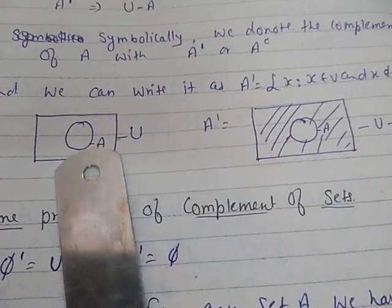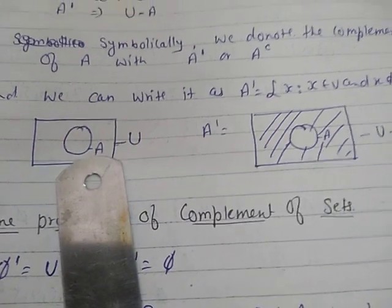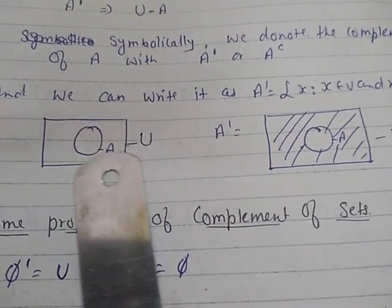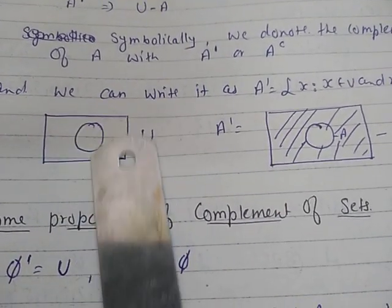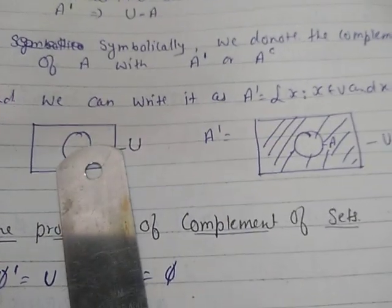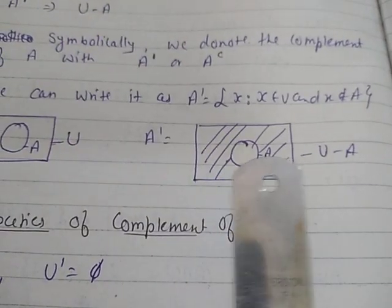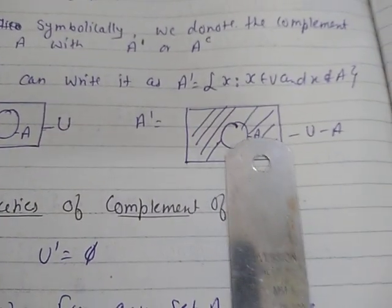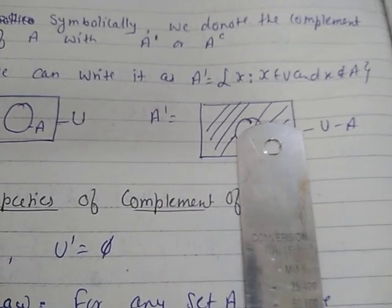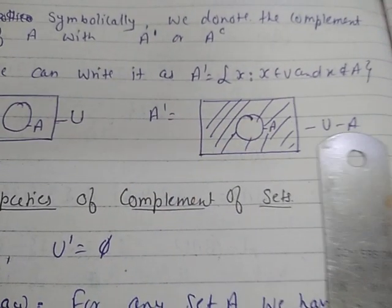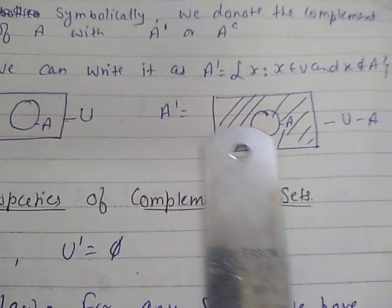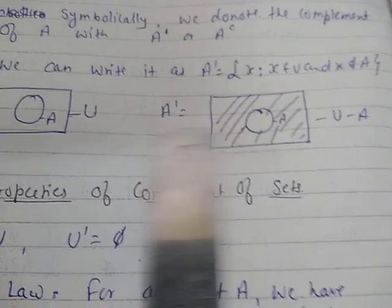In the Venn diagram, the rectangle depicts the universal set and the circle represents set A. A complement means which are not in A. So this circle is not part of the complement — hence it is unshaded. The shaded region outside the circle is your U minus A, which is A complement.